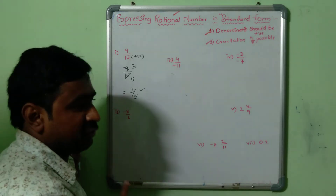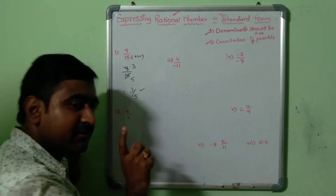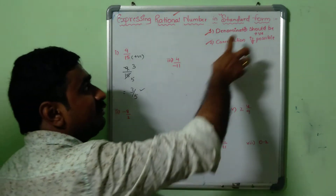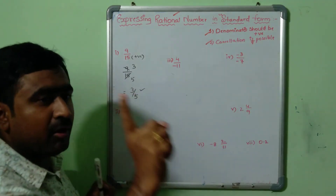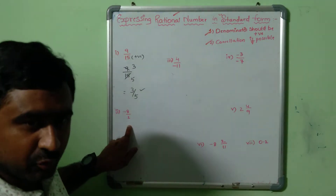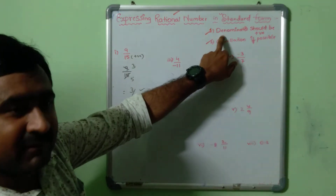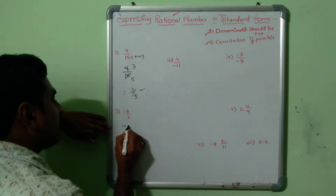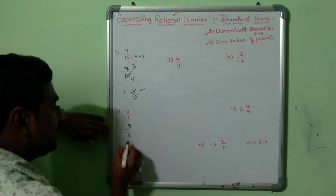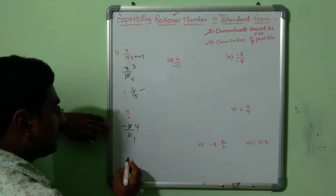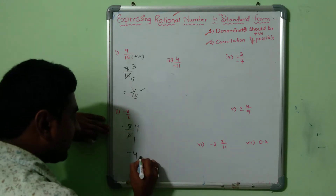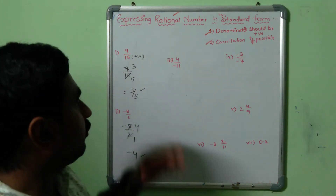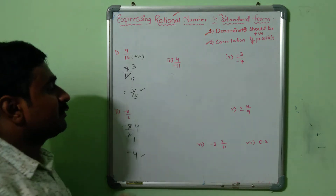Second example: −8/2 is the given rational number. First step — is the denominator positive? 2 is positive, so no issue. Second step, cancellation: −8 divided by 2, using the 2 times table, 2×4=8, so we get −4. Therefore, −4 is the standard form of −8/2.